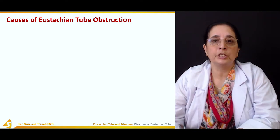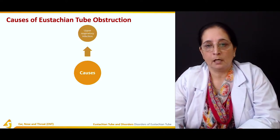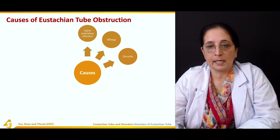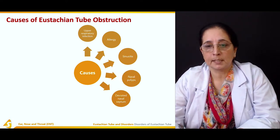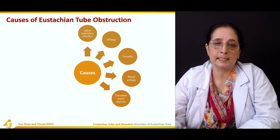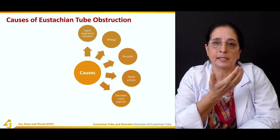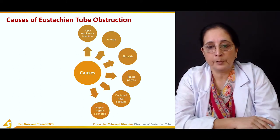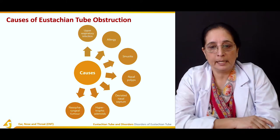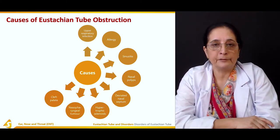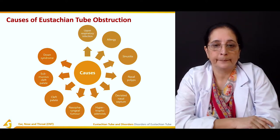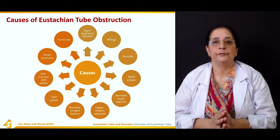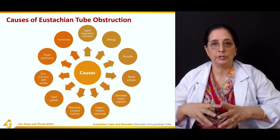What are the causes of Eustachian tube obstruction? Causes include upper respiratory tract infection, allergy, sinusitis, nasal polyps, DNS or deviated nasal septum — if the septum of the nose is deflected to one side, it usually leads to more infections and allergies — hypertrophic adenoids, nasopharyngeal tumor, cleft palate, submucous cleft palate, Down syndrome, and functional causes.